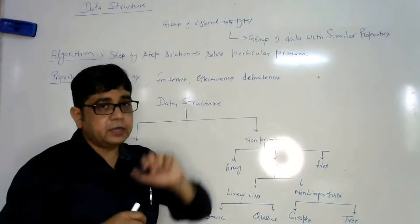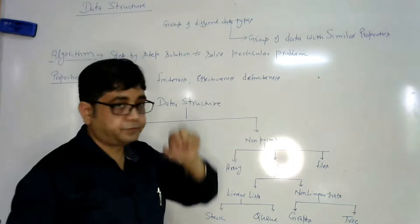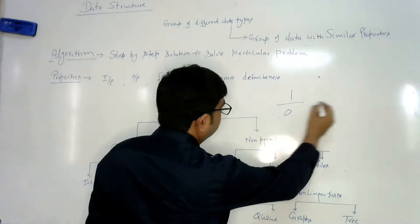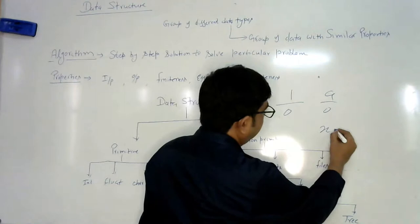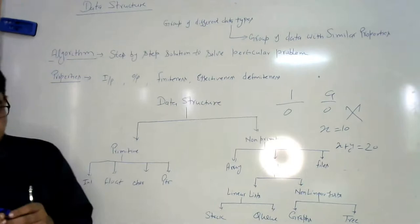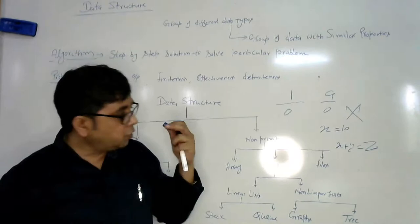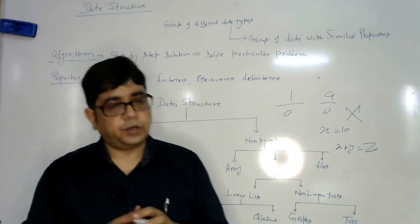Definiteness, every algorithm must be defined properties, must have some definite result. Definite result means, suppose we are dividing a by 0, or we are writing an expression x equal to 10, then x plus y equal to 20. These are not producing some definite results. What is the value of x, what is the value of y and what is the value of z? We do not know the values of this. There is not any definite value defined for it. We cannot write such type of steps in writing any algorithm.